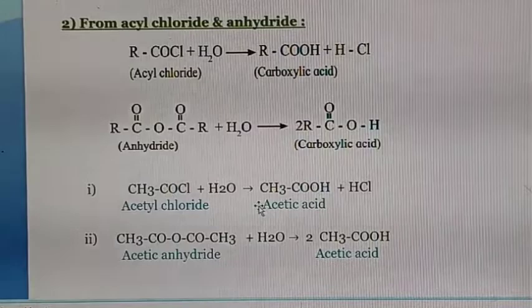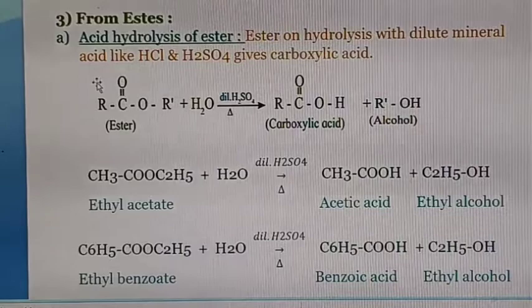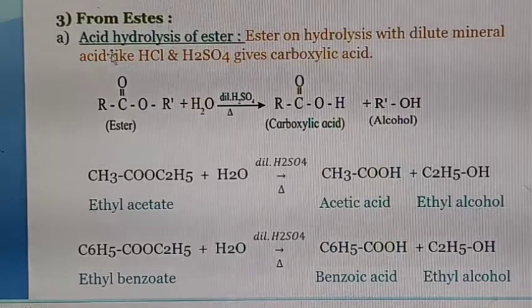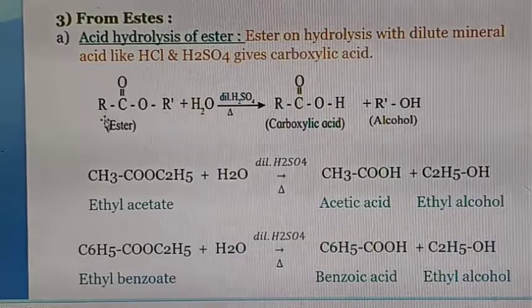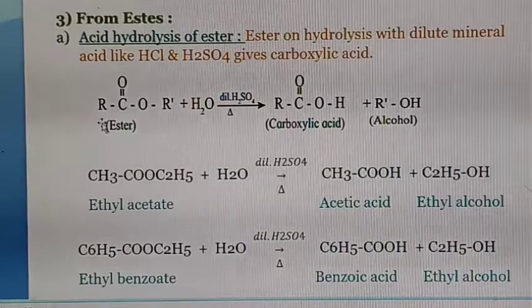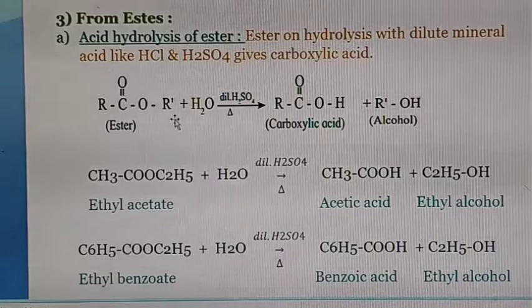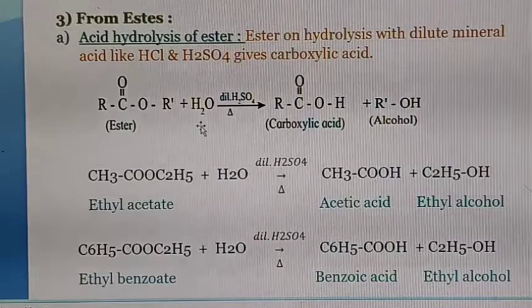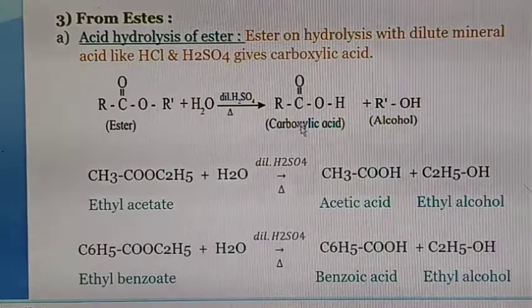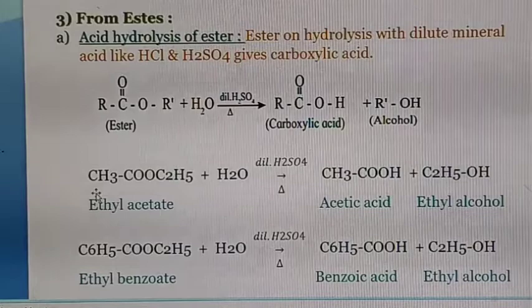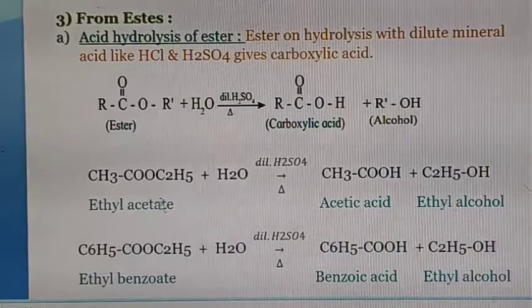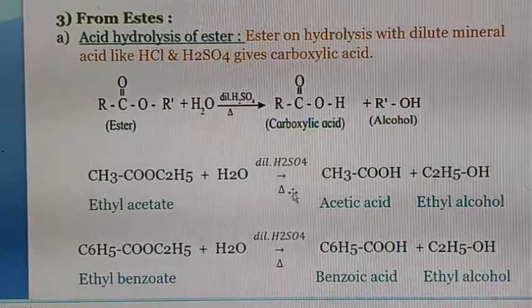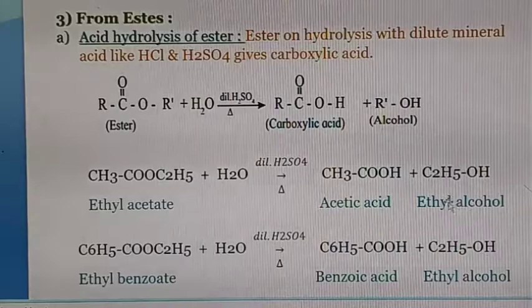Next is from ester. From ester we can prepare carboxylic acid by two different methods. One is acid hydrolysis of ester. The ester has the general formula RCOOR′, where R is CH₃ or any alkyl group and R′ is any alkyl group. When RCOOR′ undergoes hydrolysis in presence of dilute H₂SO₄, it gives the corresponding carboxylic acid with formation of alcohol. For example, CH₃COOC₂H₅ (ethyl acetate) treated with water in dilute H₂SO₄ gives acetic acid and ethyl alcohol.